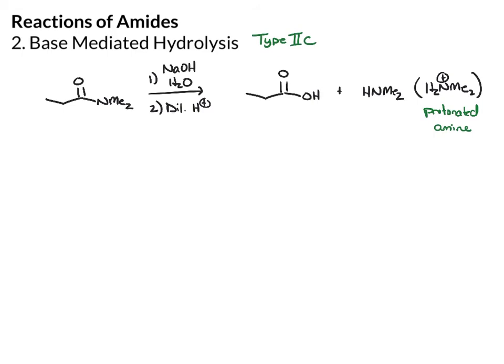But on first glance, like the acidic conditions, we see that we're forming a less stable carboxylic acid from a more stable amide, which doesn't look possible at first, because usually we're forming more stable things. So we have to find a driving force for this reaction as well, and we can do that if we go through the mechanistic steps.